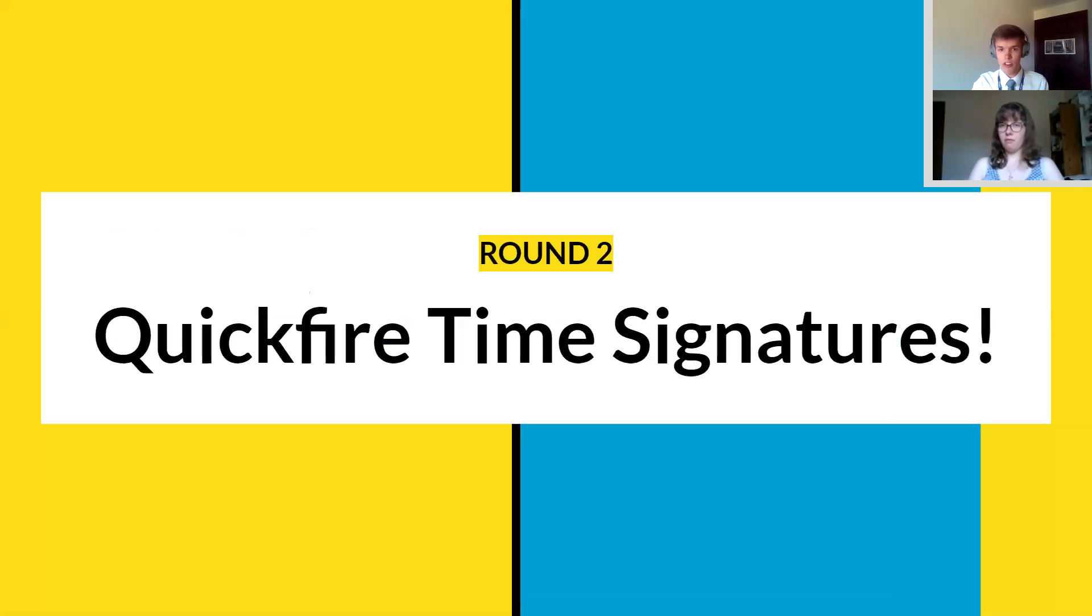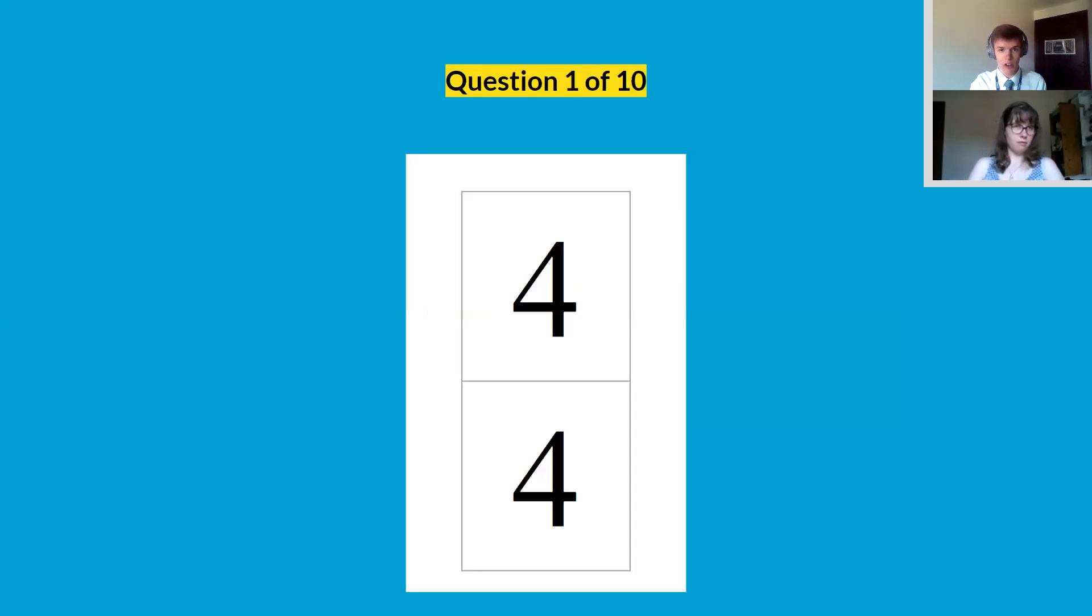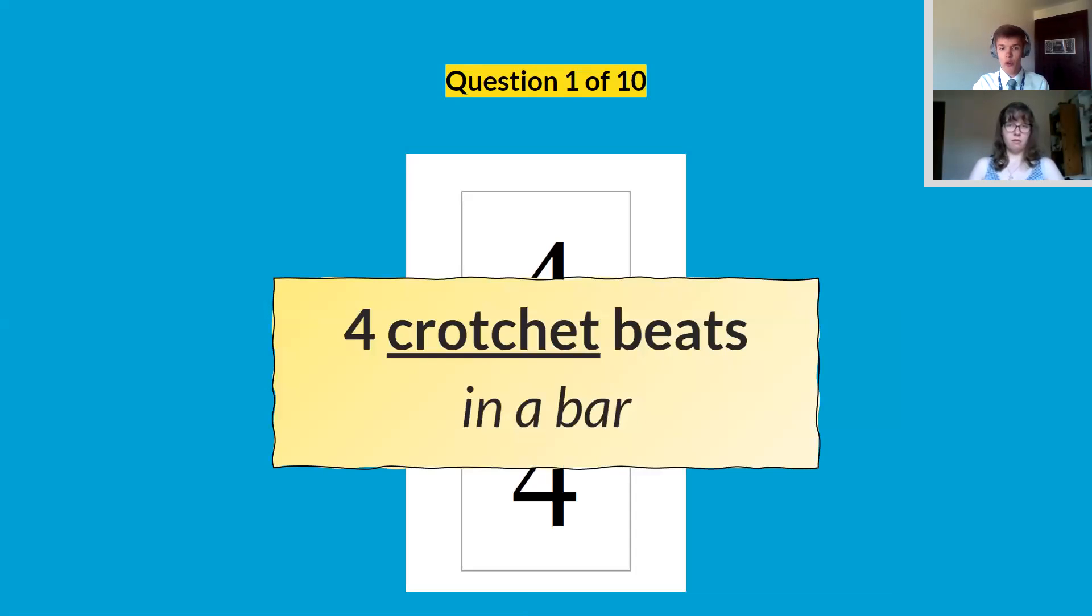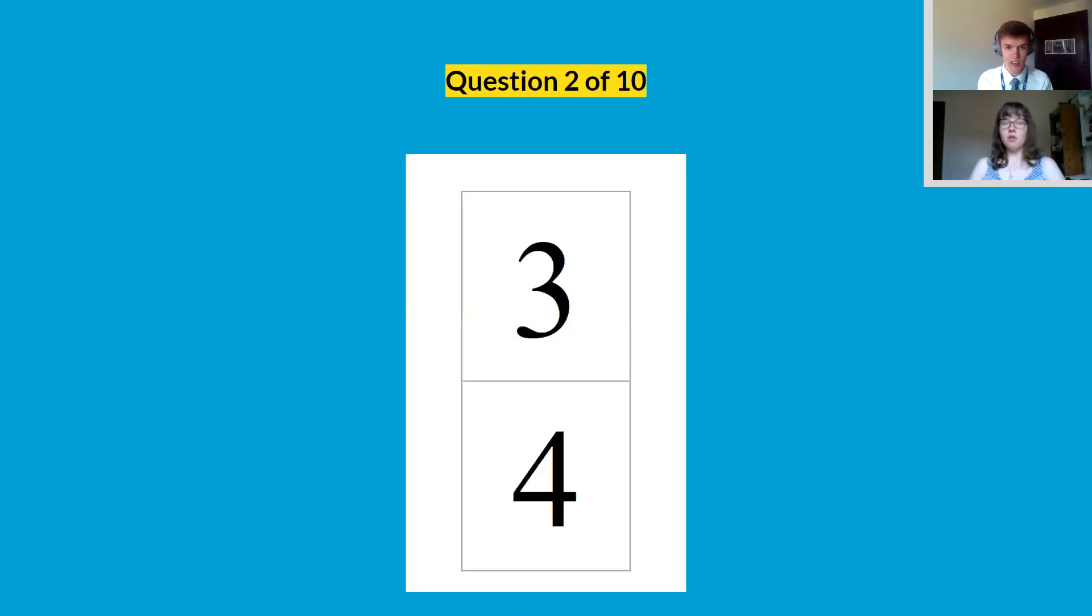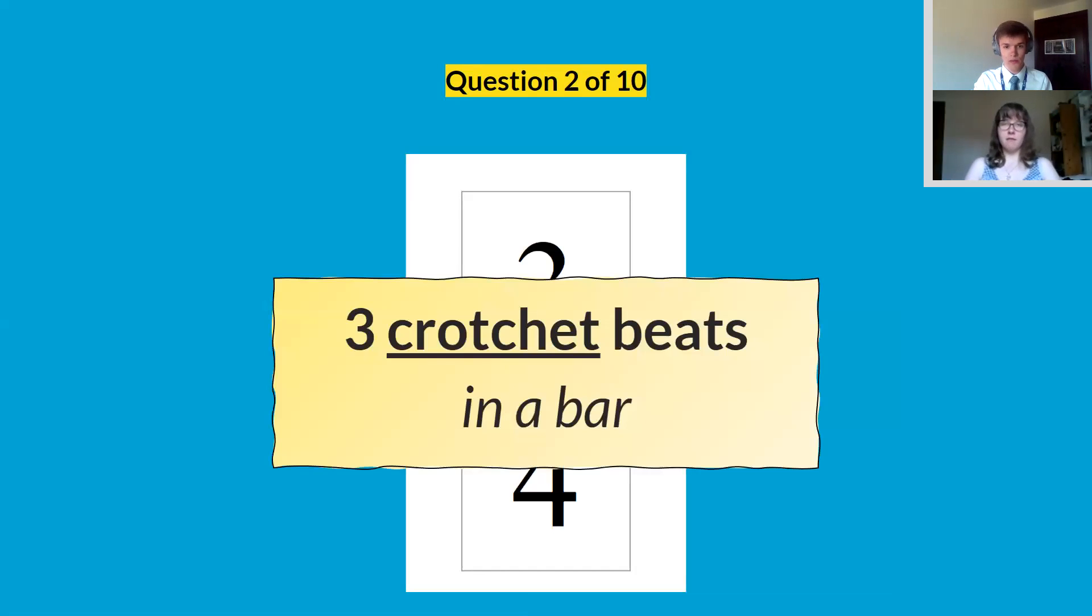Next round, it was the time signatures. So here we go. The first one, four, four. It's four crotchet beats in a bar. Probably our first time signature that we always think of or learn about. Question two, three, four is three crotchets in a bar. So very similar to before.